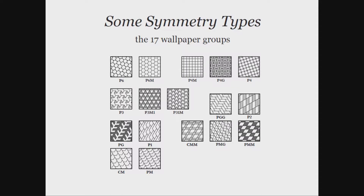The famous result — the 17 wallpaper groups. These are the 17 possible symmetry structures for patterns that repeat in two independent directions in the plane. That's the sort of classification we're going to be looking at, and those are what we're going to be sampling.